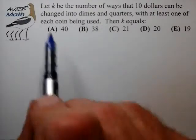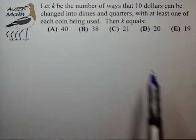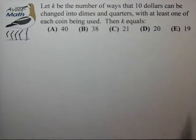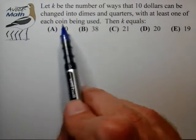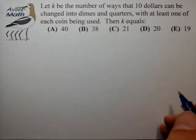So let's take a look at what we have here. We want to have k be the number of ways that $10 can be changed into dimes and quarters with at least one of each coin being used. So essentially, we're not going to consider the case where we have zero dimes or zero quarters.